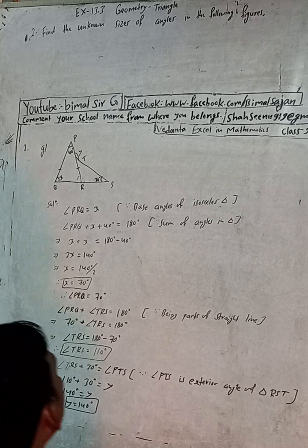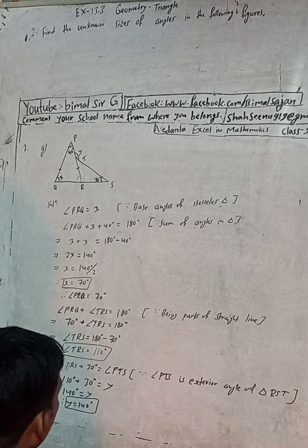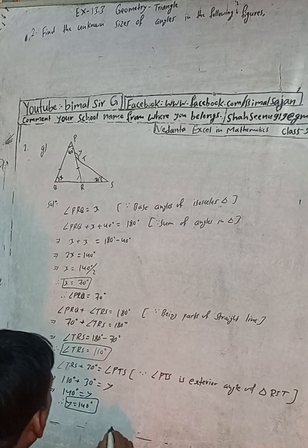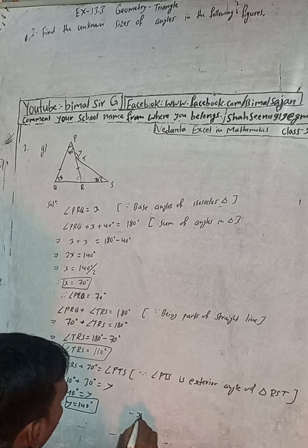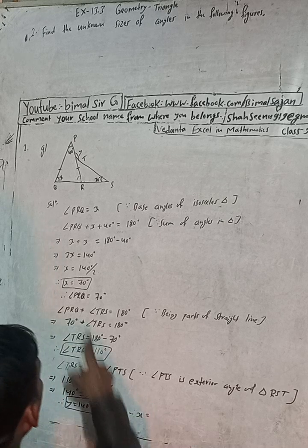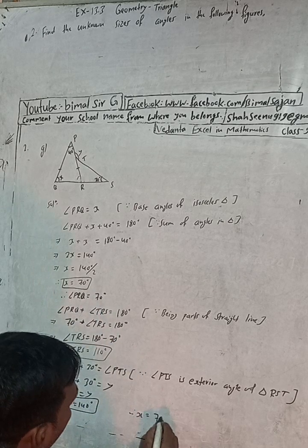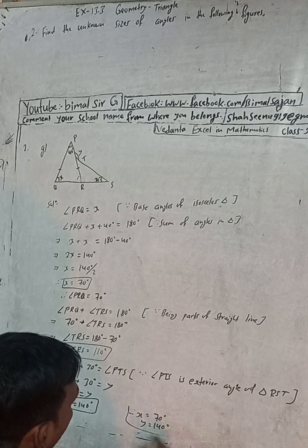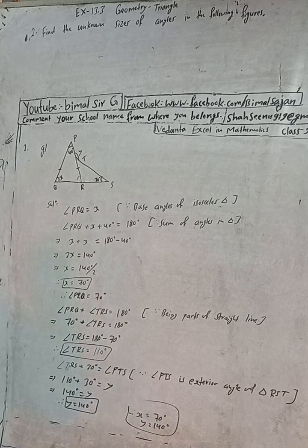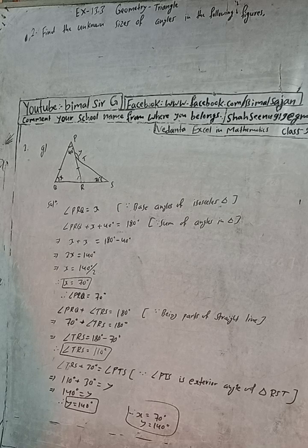So our required answers are: X is equal to 70 degrees and Y is equal to 140 degrees. This is the answer — question 2G gives 70 degrees and 140 degrees.